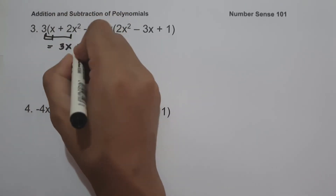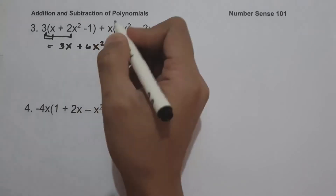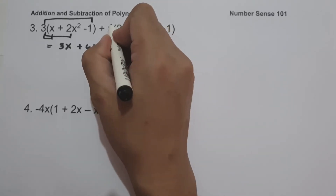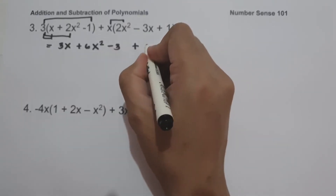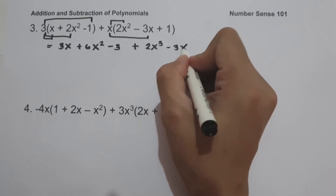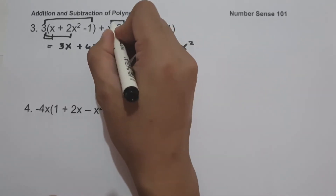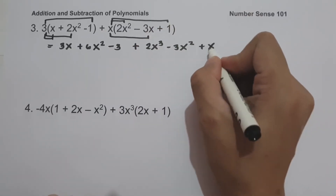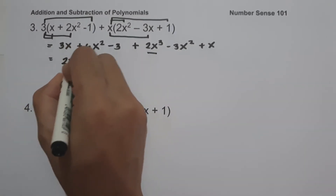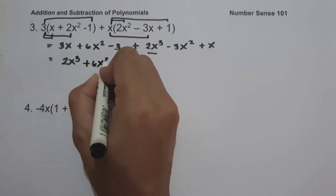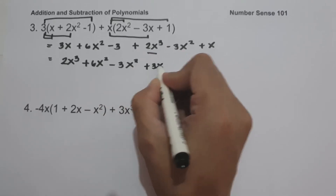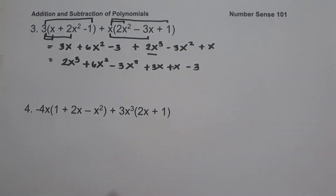3 multiplied by 2x squared is 6x squared, and 3 multiplied by negative 1 is negative 3. Then x times 2x squared is 2x cubed, x multiplied by negative 3x is negative 3x squared, and x multiplied by 1 is simply x. So let us rewrite this as 2x cubed plus 6x squared, then negative 3x squared plus 3x plus x minus 3. So let us combine like terms.